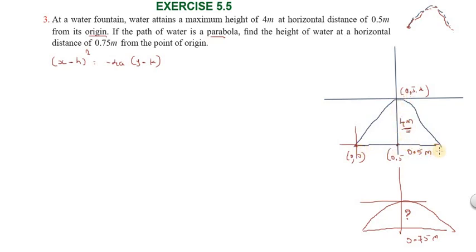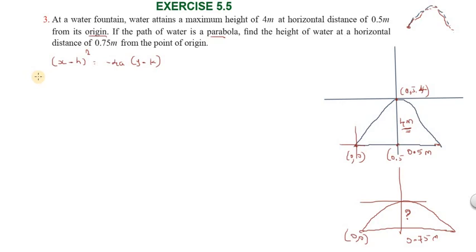The maximum height is 4 meters at a horizontal distance of 0.5 meters. So the vertex point is (0.5, 4). The origin point is (0, 0), and the water lands back on the floor at 0.5 meters horizontal distance, giving us the downward-opening parabola with center passing through (0.5, 4).